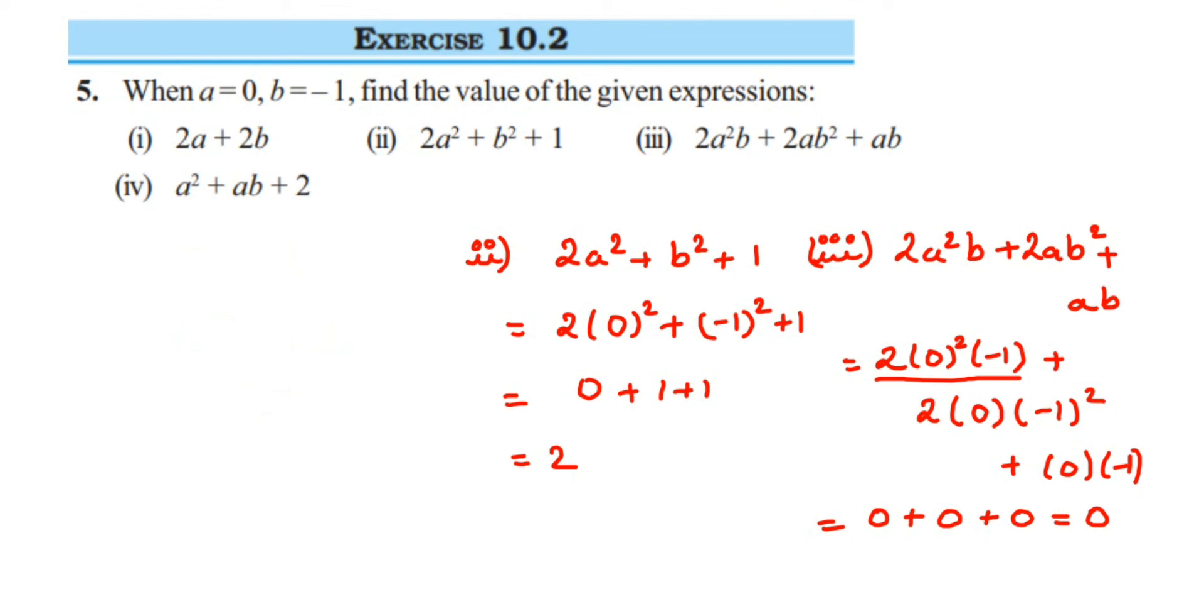The fourth question, which is the last question here: a² plus ab plus 2. In place of a we are going to put 0, so it's 0² plus a value here is 0, so 0 into b value here is minus 1, then plus 2. So it will be 0 plus 0 plus 2 which is equal to 2.